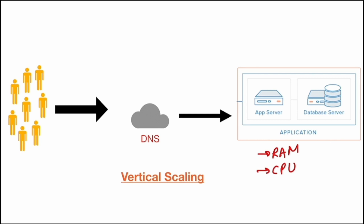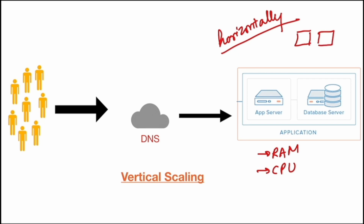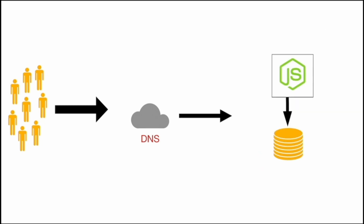On reaching that limit, we have to horizontally scale our system. By horizontally scaling, we mean increasing the number of nodes on which our application is deployed. The first step is to split the database and the application servers into different nodes. Earlier we deployed application logic and the database on a single machine, but now we allocate a different machine to host the application logic and a different machine to host the database.